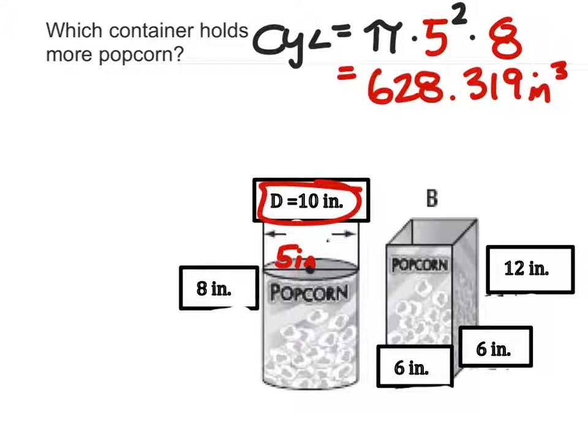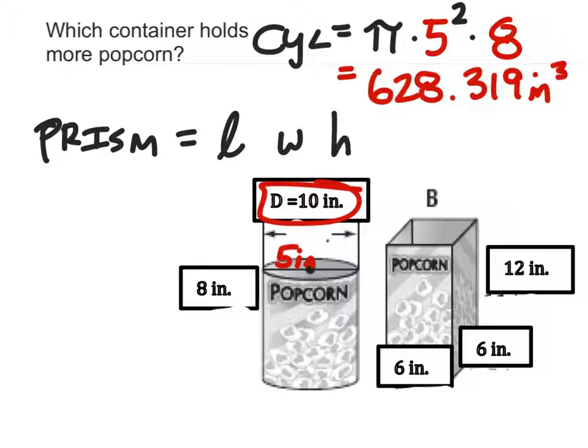Alright, now let's look at the box or technically we would consider that a rectangular prism. So that is just length times the width times the height. And we could say the length is this 6 inches, and the width as well is this 6 inches, and the height looks to be 12.